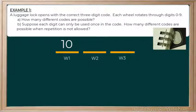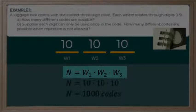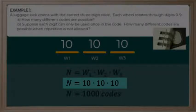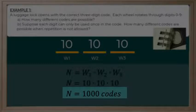Therefore, wheel 2 and wheel 3 will also have 10 possibilities. Let's calculate the total number of codes. I'm going to use the variable n to represent the number of possibilities, and using the Fundamental Counting Principle to multiply each of the possibilities for each of the wheels. Since there are 10 possibilities for each wheel, I simply multiply 10 times 10 times 10, which gives me 1,000 total possible codes.